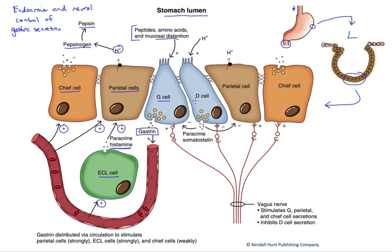Next to our G cell, we have a D cell. D cells produce another paracrine agent called somatostatin, which acts as putting the brakes on the G cells, decreasing the production of gastrin. The D cells are tonically active — these are the cells that are turning off the G cells, which would then turn off the chief cells and parietal cells, keeping our stomach activity low between meals. They get inhibited once we eat a meal. They also inhibit parietal cell acid secretion directly, helping to keep stomach activity minimized between meals.